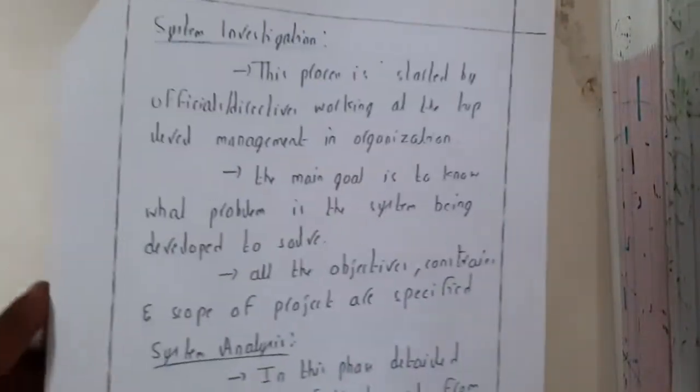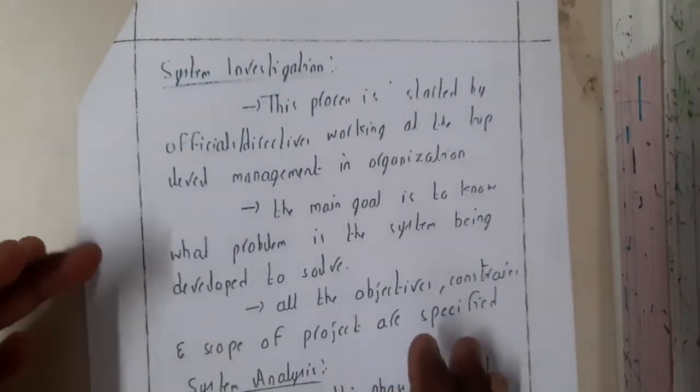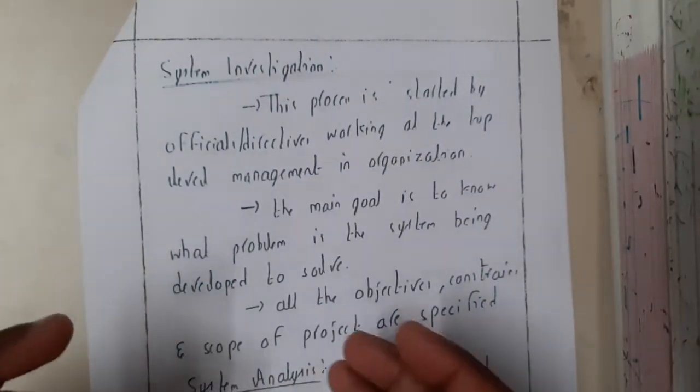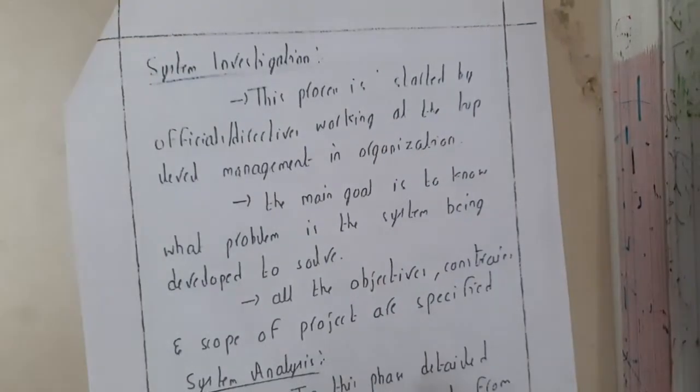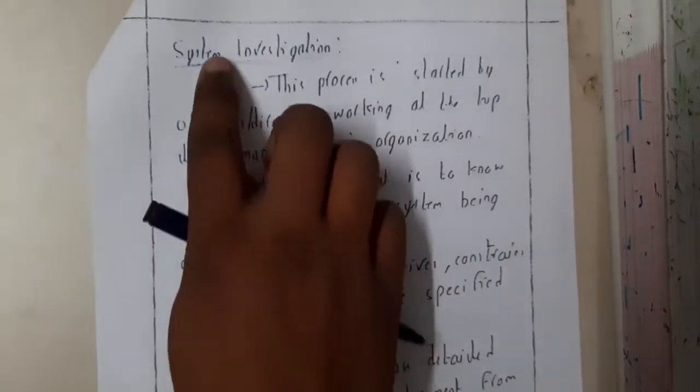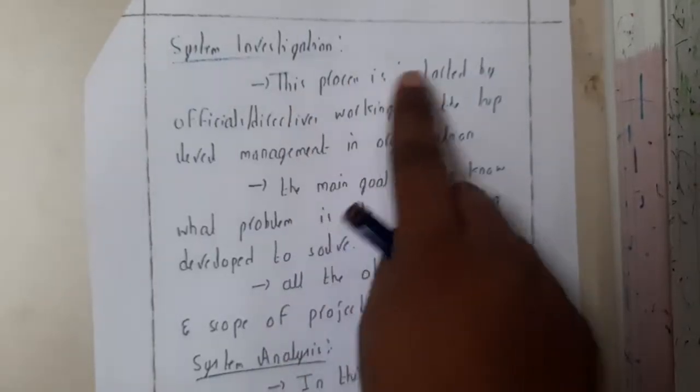System investigation. So this process is started by the officials or directives working at the top level of management of organization. So someone will be initializing this investigation. Assume that there is a case, so the higher authorities will be saying for you to take the case. So they will be assigning someone to do it.